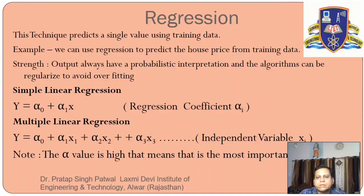Here the alpha i is a regression coefficient. In multiple linear regression, y equal to alpha0 plus alpha1 x1 plus alpha2 x2 and so on.